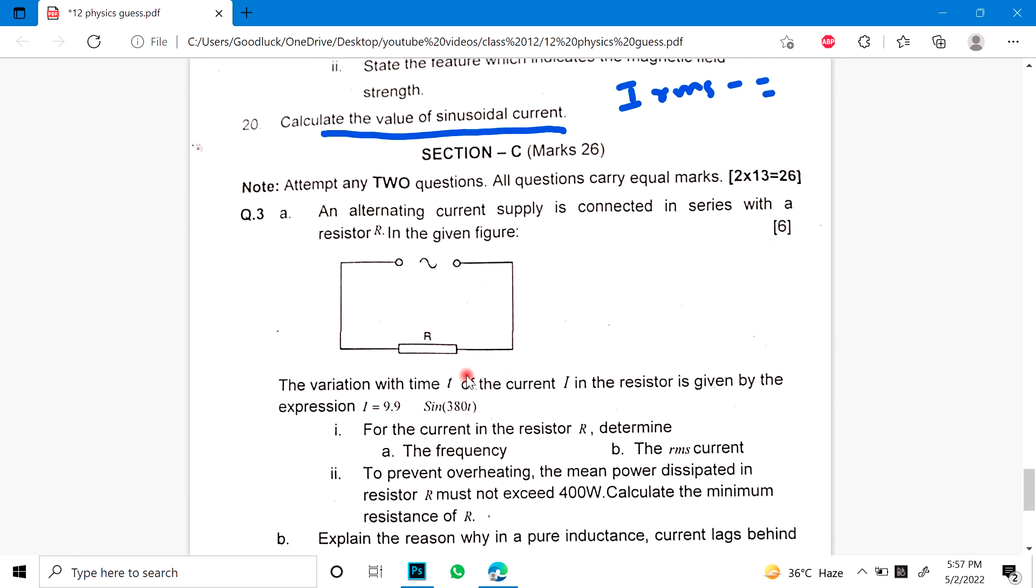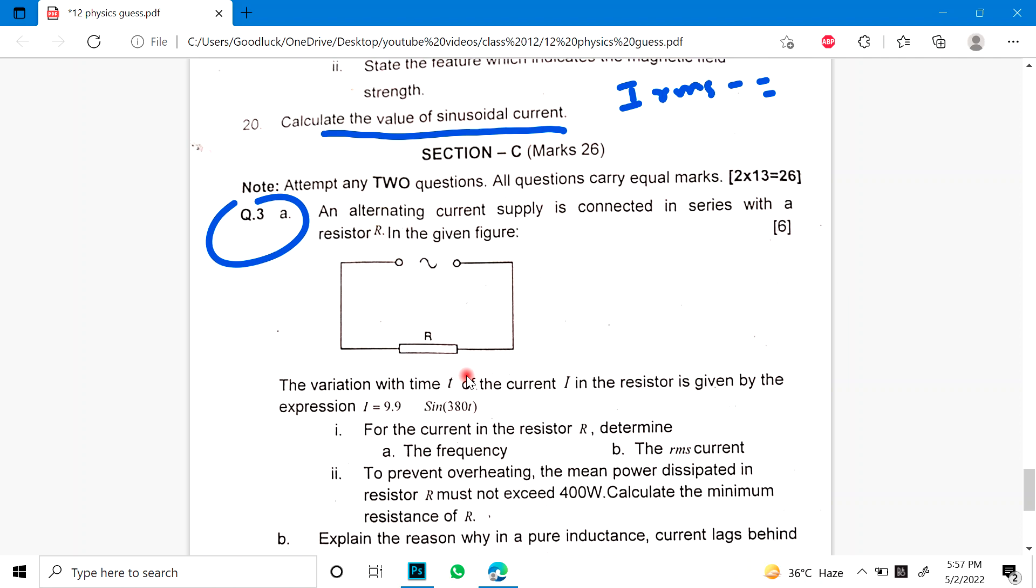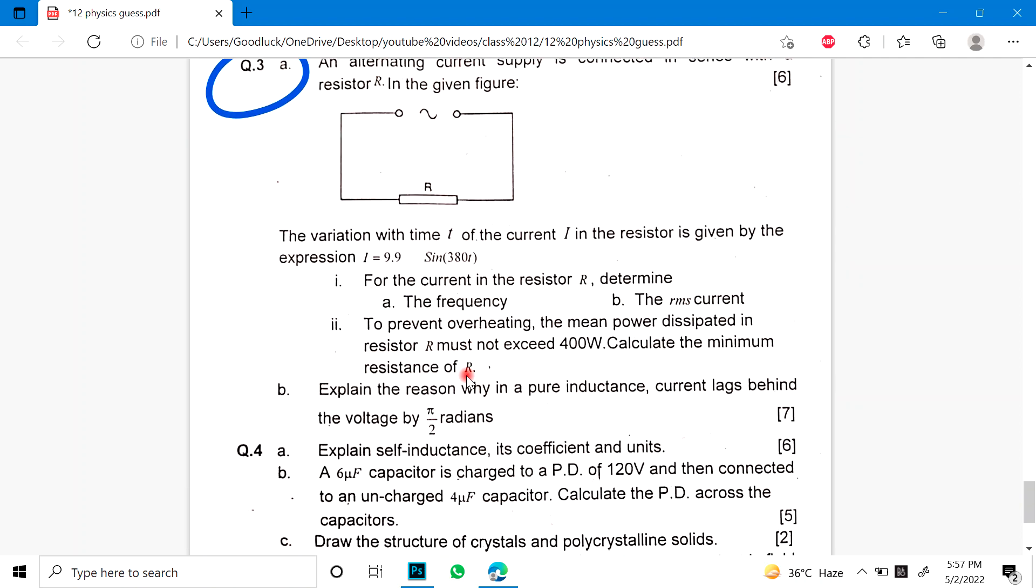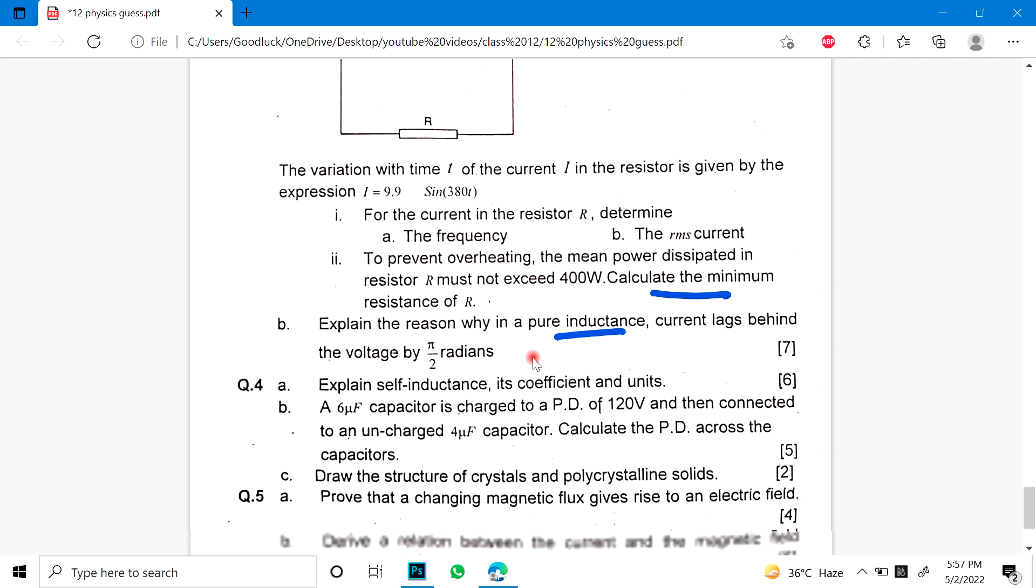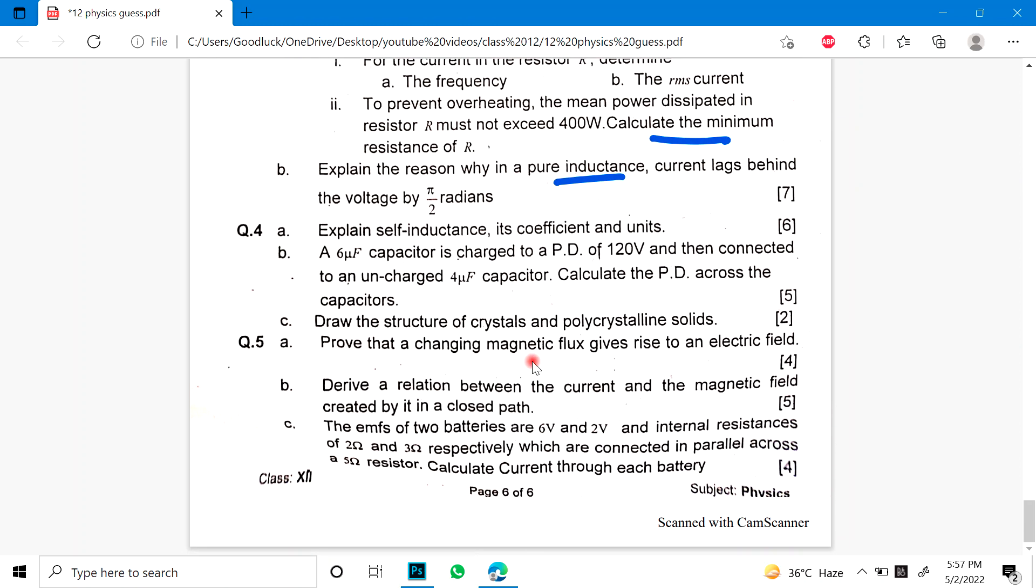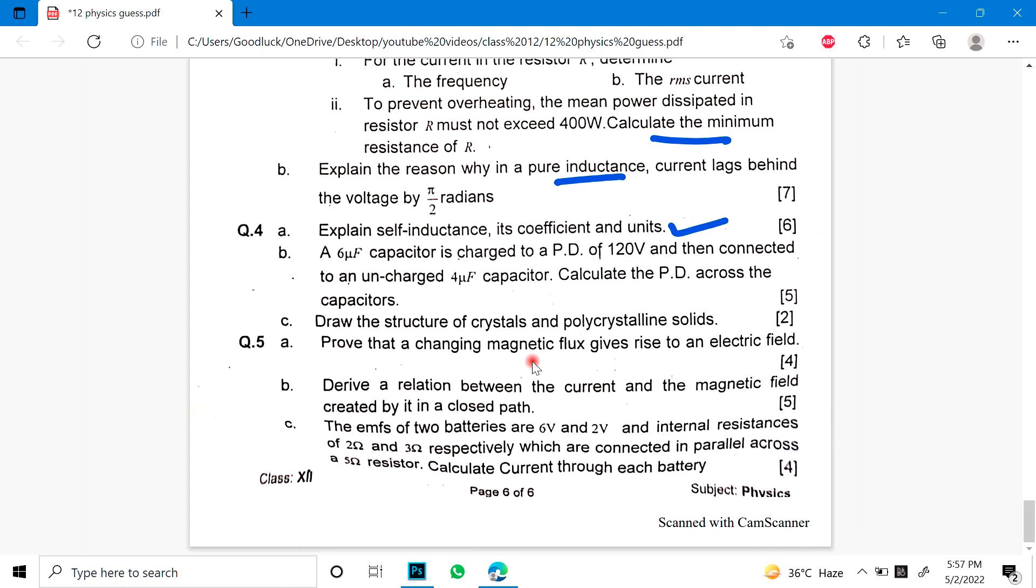Third is a question which is long. Part A: An alternating current supply is connected in series with a resistor as shown in the figure. You have used frequency, RMS current to prevent overheating, minimum resistance. B: Explain the reason why in pure inductance current lags behind the voltage by π/2 radians. So this is inductor, capacitor and resistor chapter. Then you have a fourth: Explain the self inductance, give its coefficient and unit Henry. B part is a numerical in which you have put potential difference, in which you have put a capacitor across.